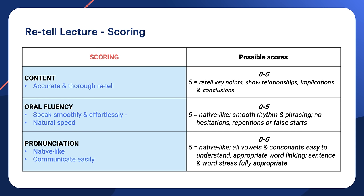Okay, so let's take a close look at how you're scored for retell lecture. For scoring, again, it's content, oral fluency and pronunciation — the three keys to a high PTE speaking score. So reflect on your own performance. How did you do? How was your content, pronunciation and oral fluency? Which aspect or aspects do you need to work on?